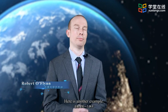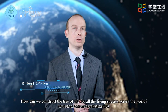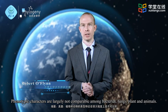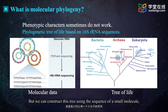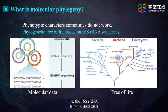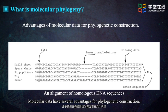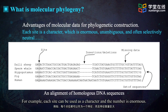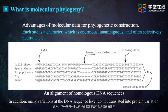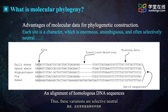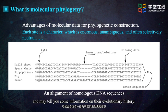Here is another example. How can we construct the tree of life for all the living species across the world? Phenotypic characters are largely not comparable among bacteria, fungi, plants, and animals. But we can construct this tree using the sequence of a small molecule, the 16S rRNA. Molecular data have several advantages: each site can be used as a character and the number is enormous. As all species share the common set of nucleotides, they are highly comparable and unambiguous. In addition, many variations at the DNA sequence level do not translate into protein variation; thus, these variations are selectively neutral and may tell us information about evolutionary history.